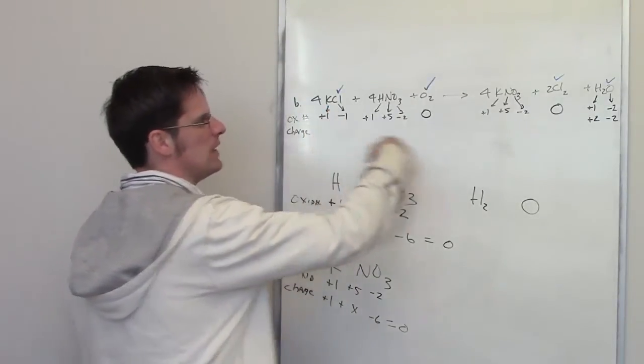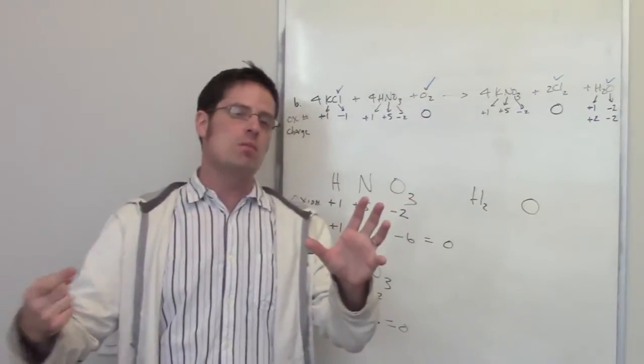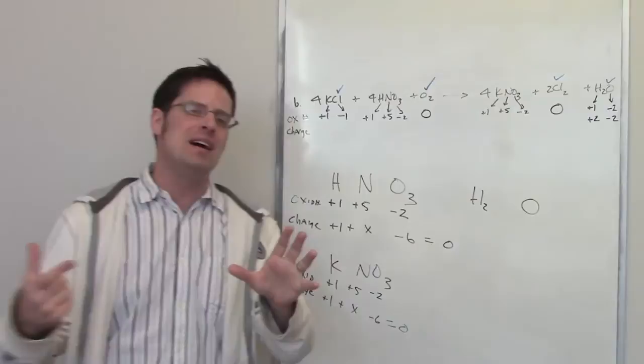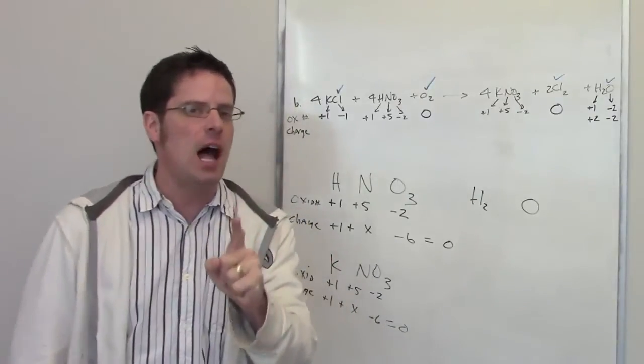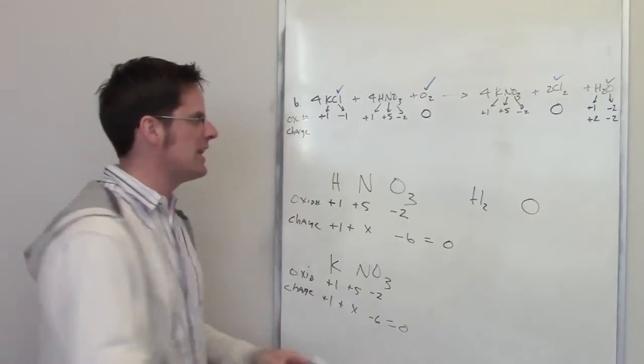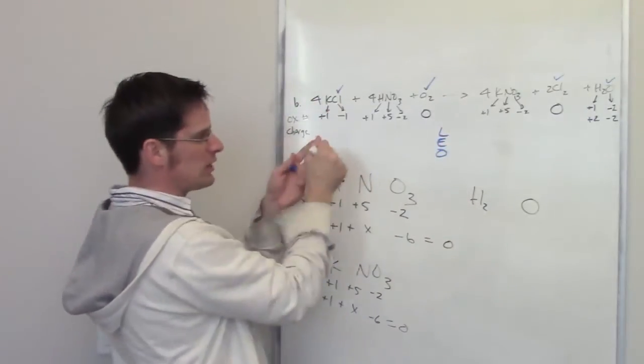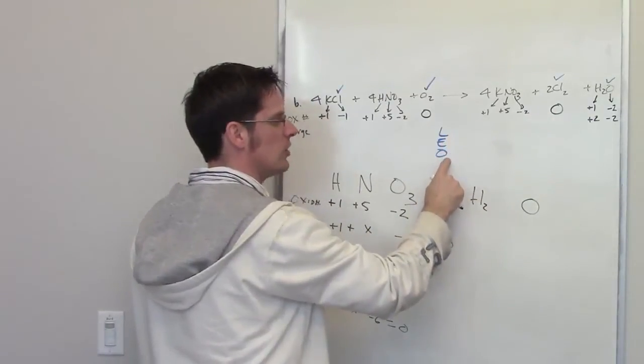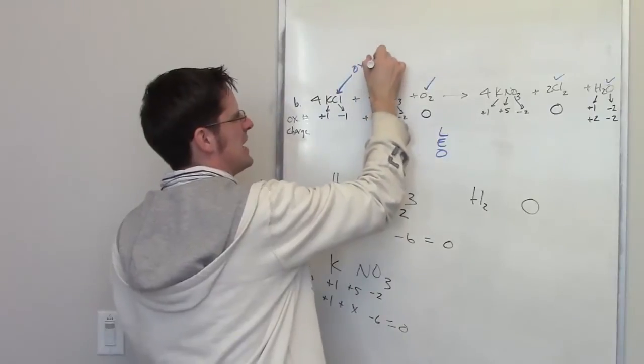So let's take a look at our two changers. I've got chlorine going from negative one to zero. Going from a negative number to zero, I'm becoming more and more positive. How does a chlorine become more positive or lose negativity? By losing electrons. I lose electrons to become more positive. That is oxidation. So this chlorine right here has been oxidized.